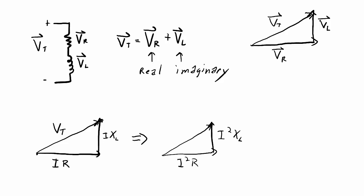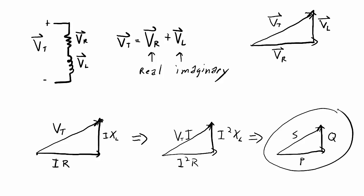The sum of those two gives a new vector with magnitude Vt times I. From our definitions: I²R is the real power P, I²XL is the reactive power Q, and Vt times I is the apparent power S. So the power triangle is simply derived from the voltages across components and current through them — real components and reactive components — giving a trigonometric relationship between P, Q, and S.